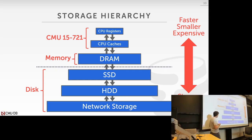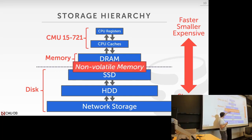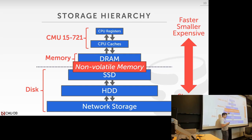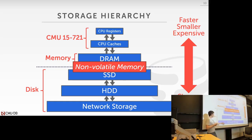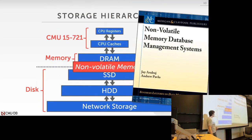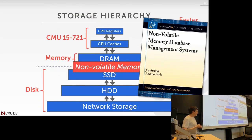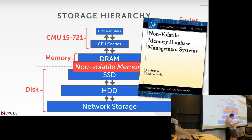There is a new class of storage devices called non-volatile memory that straddles the line. Intel Optane is the first to actually release this. It sits in the DIMM slot and is byte-addressable like DRAM, but like an SSD, it persists all your data if you pull power. This is the future of what computers are going to look like — but it's not yet widely available.